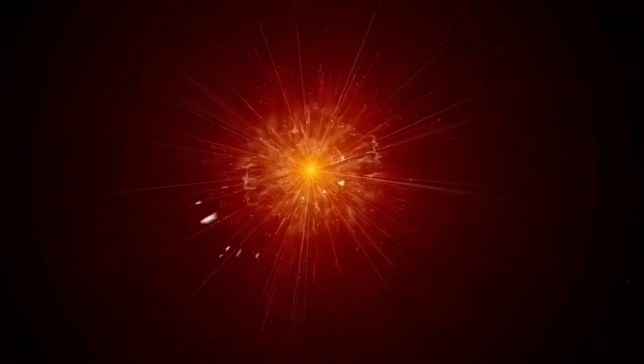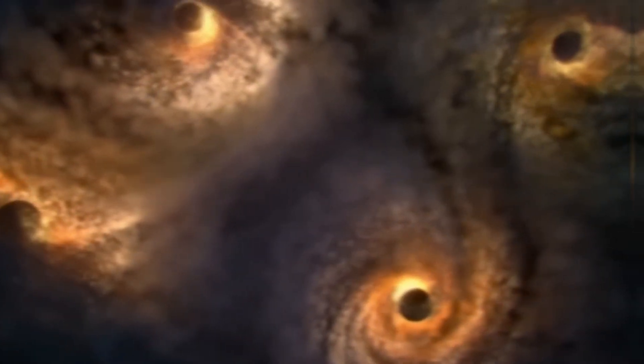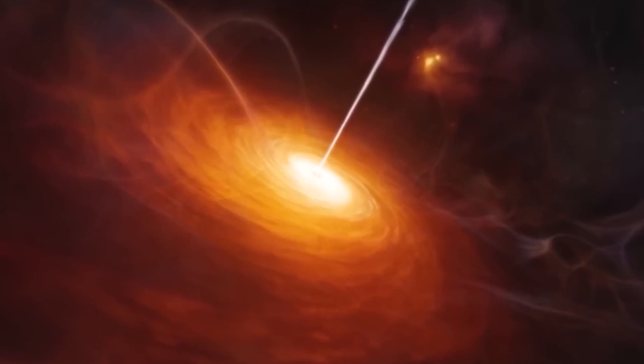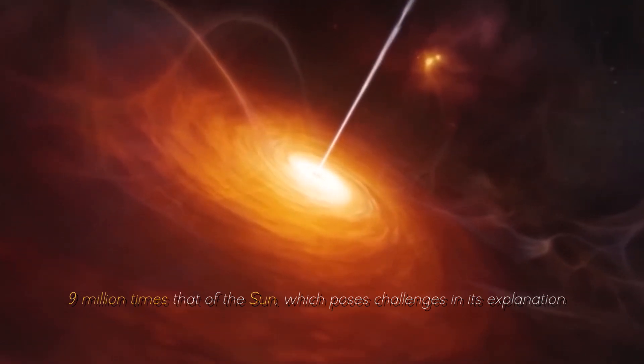In connection with quasars, astronomers using the James Webb Telescope have identified the farthest supermassive black hole ever observed. This black hole turns out to be one of the least massive in the universe, with a mass equivalent to about 9 million times that of the Sun, which poses challenges in its explanation.